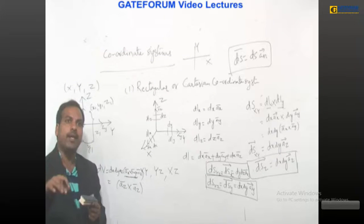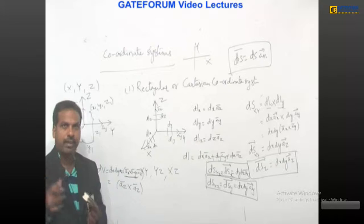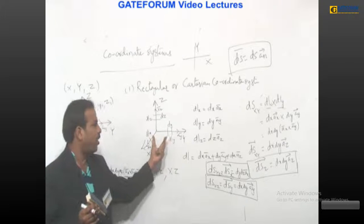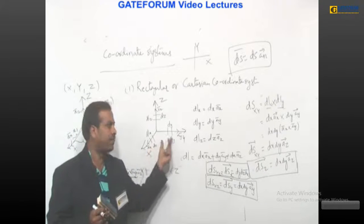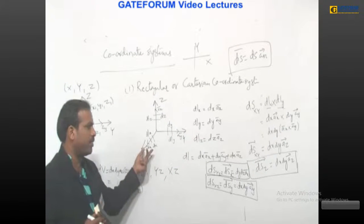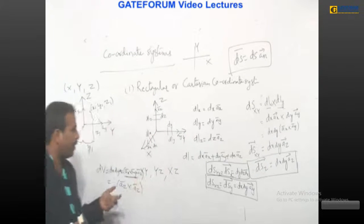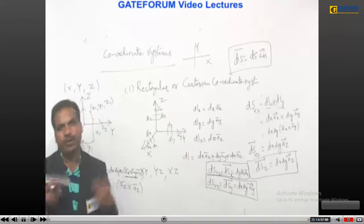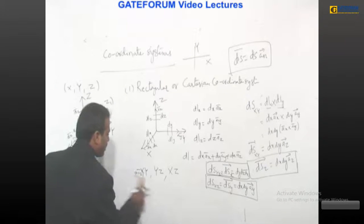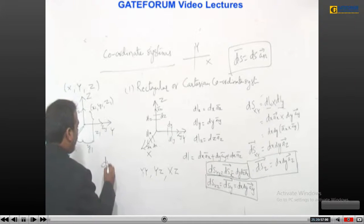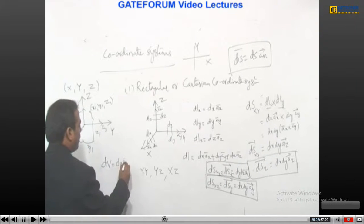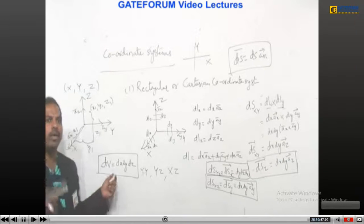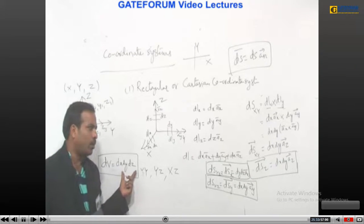Instead of taking the differential volume as a vector quantity, we take it as a scalar. There is a certain finite volume based on the three-dimensional coordinates x, y, and z. So you cannot say the volume is always zero. That is why, instead of a vector representation, the differential volume is always taken as a scalar quantity — simply the product of differential lengths, without vector notation.